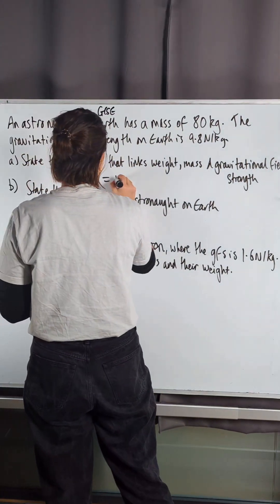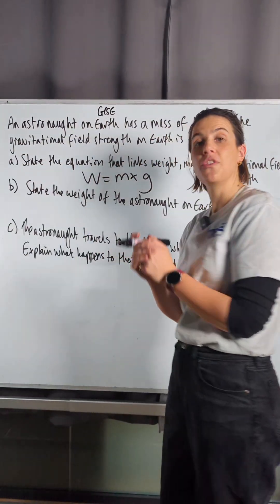We're looking for W for weight is equal to M for mass multiplied by G for gravitational field strength.